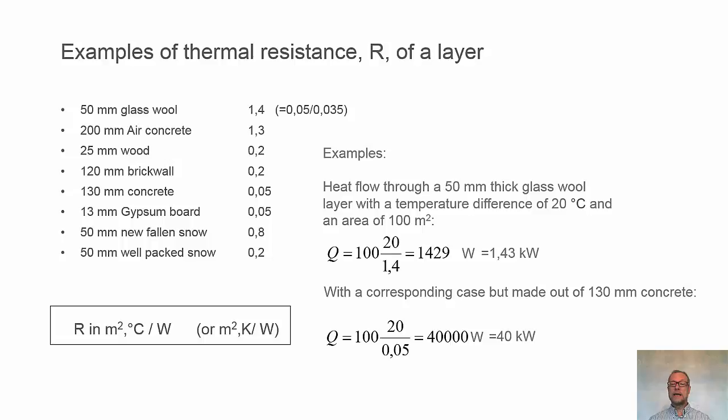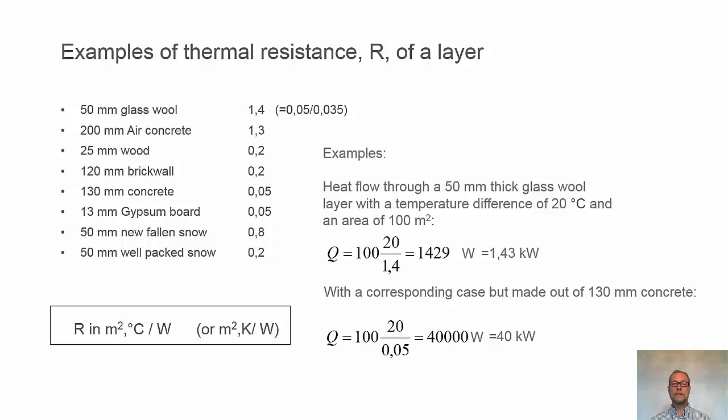If we instead take a corresponding case with 130 mm of concrete, which has thermal resistance 0.05, we get a much higher number, 40,000 watts or 40 kilowatts. We can compare how well they insulate, how much heat is transferred through the materials.